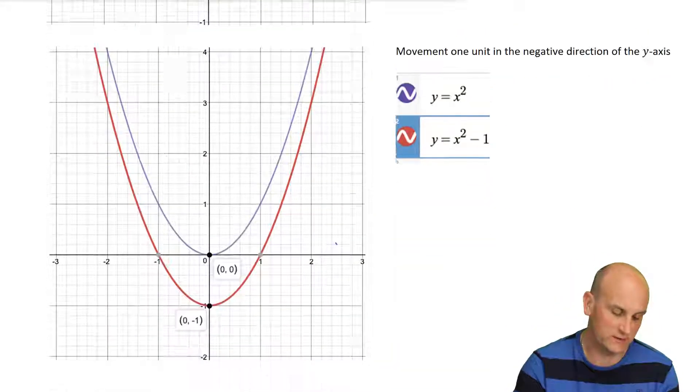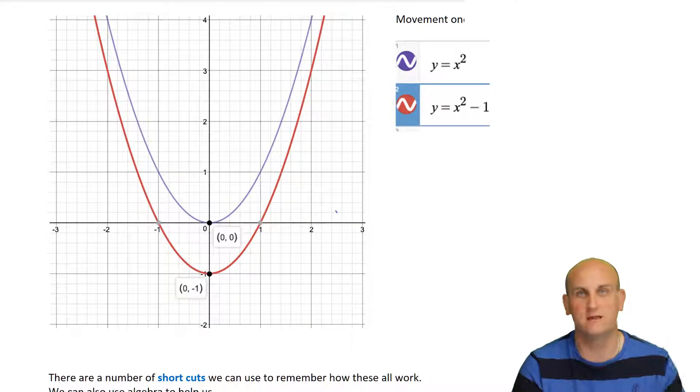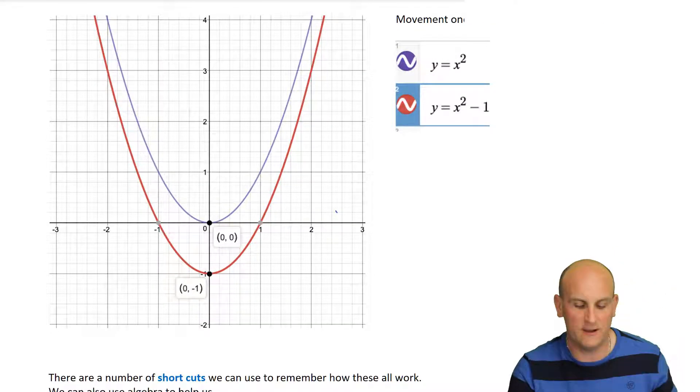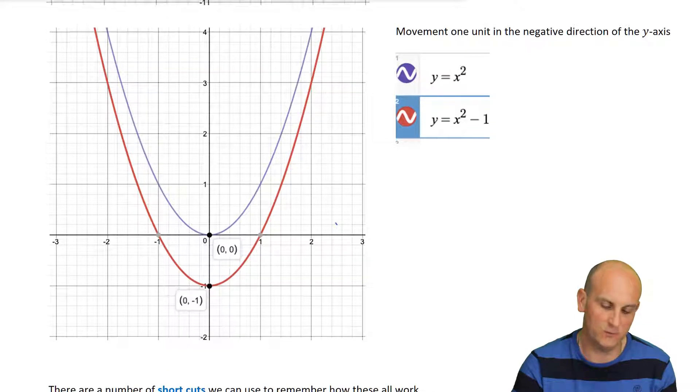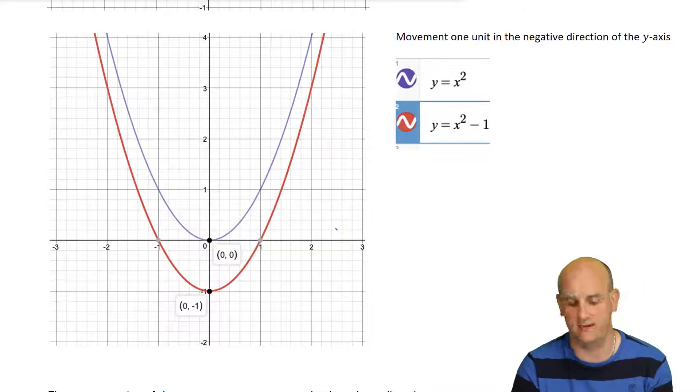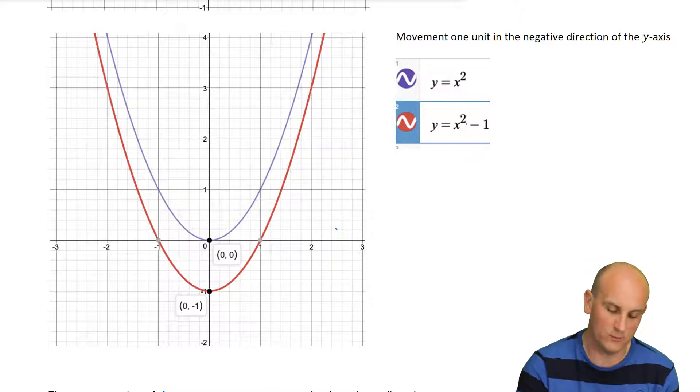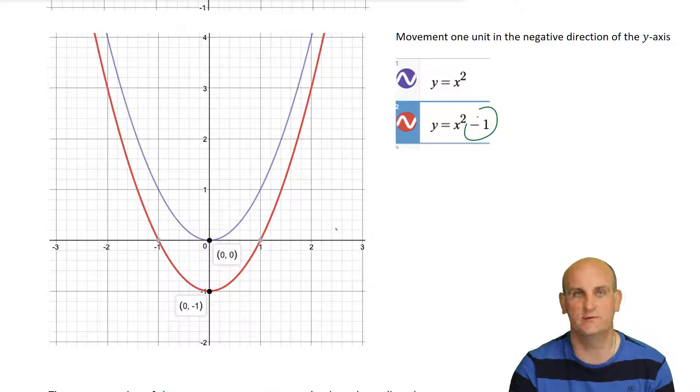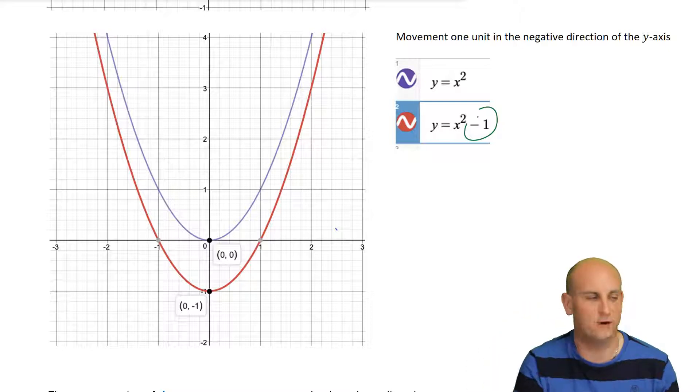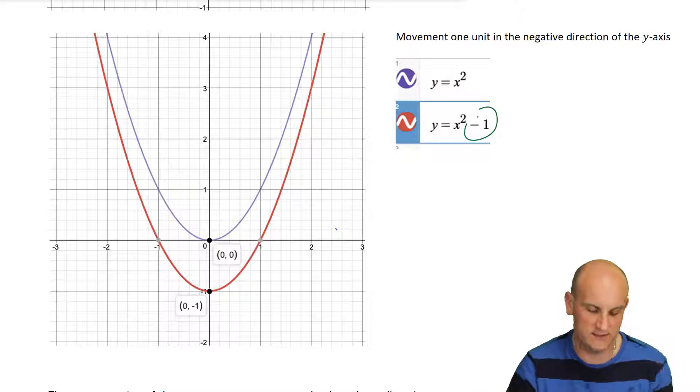And likewise, what we notice is the fourth and final graph, because we can translate horizontally that way and vertically both up and down. This one here is being moved one unit in the negative direction of the y-axis, otherwise known as down. And so, we have this minus 1 outside, which tells us it's down. And again, that minus 1 is outside of that x. It's not part of the x or the squared. It's quite separate on the end of the function.